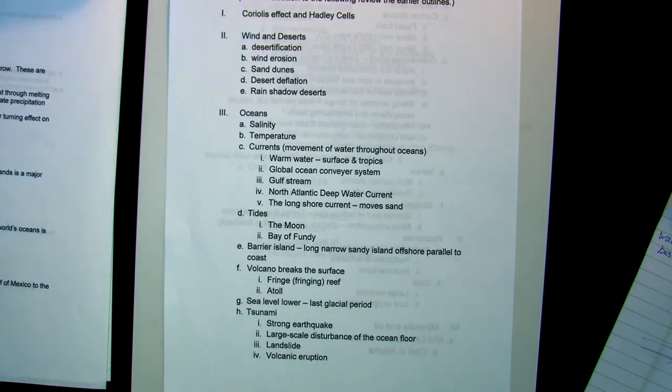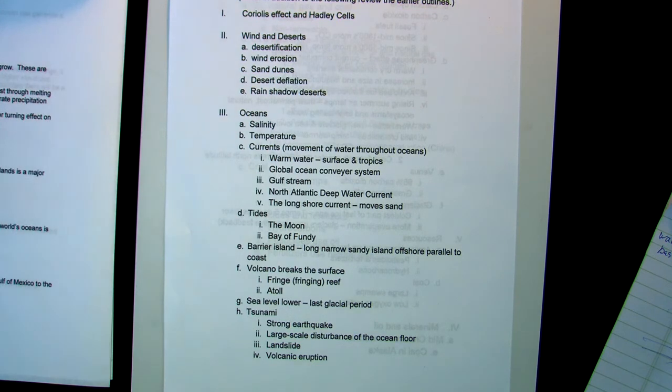Today we're talking about oceans and shorelines. Oceans are salty, but the salinity is not the same everywhere you look. Places where there's higher evaporation are going to have greater salinity. Temperature also varies. Obviously, it's going to be greater temperature near the equator and colder as you get to the poles.